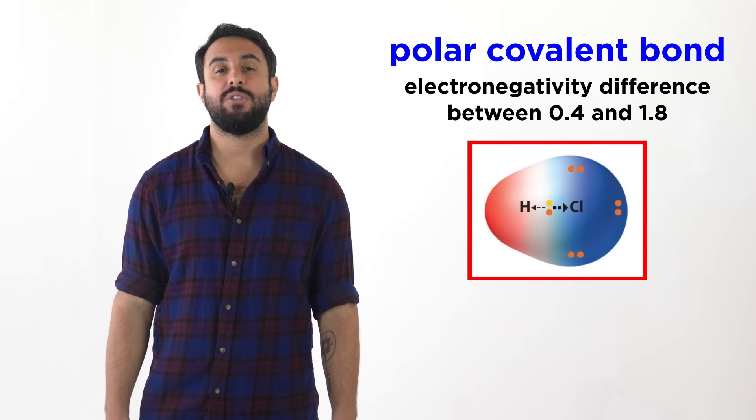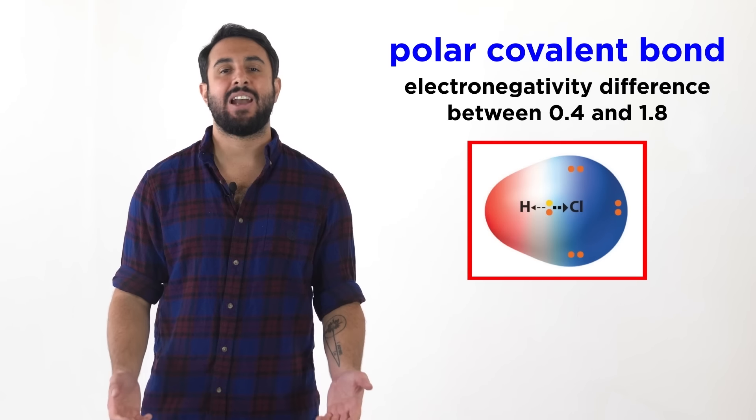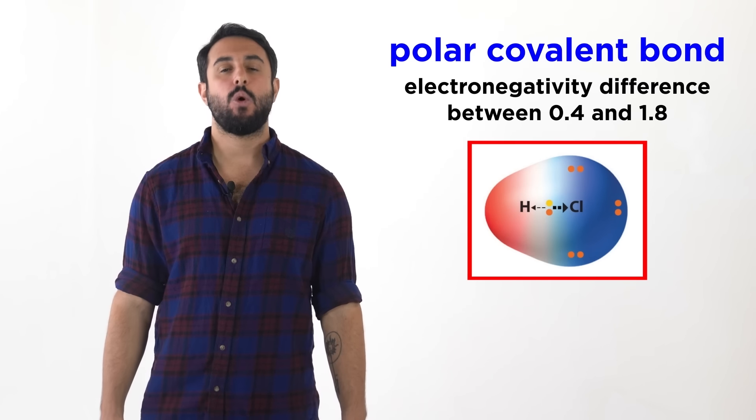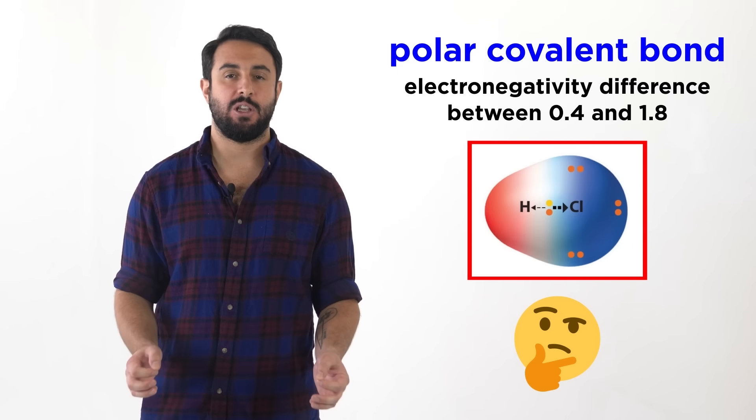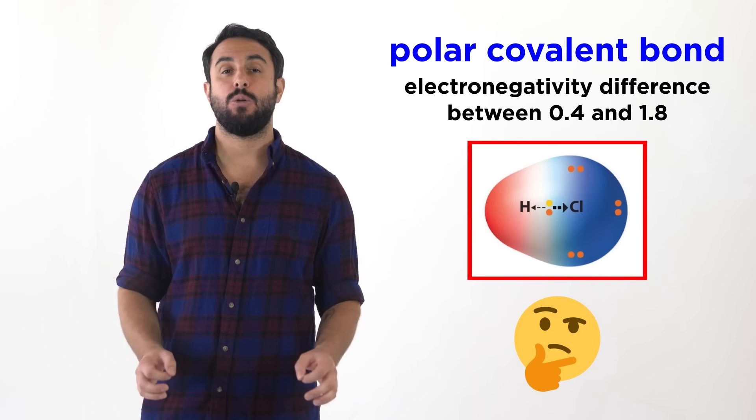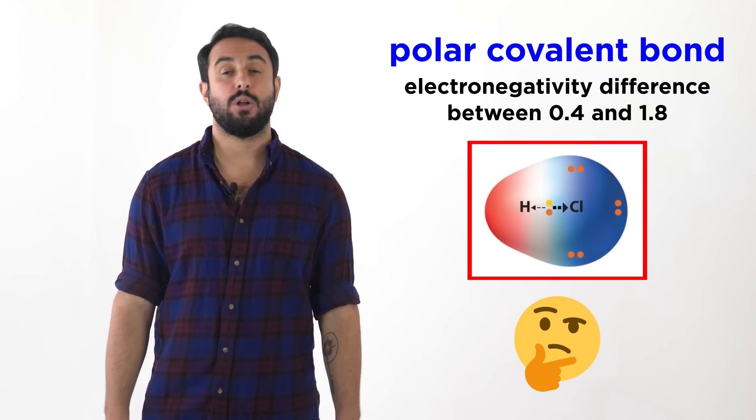The atom with more of the electron density will be partially negative, and the atom with less of the electron density will be partially positive. But how do we know if a particular molecule that contains polar bonds is polar overall? Let's take a closer look.